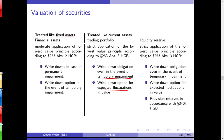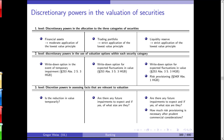There are two levels of discretionary powers in security valuation. At the first level: financial assets use the moderate lowest value principle; trading portfolio and liquidity reserve use the strict application. At the second level: within each category there are valuation options — a write-down option for temporary impairment of financial assets, a write-down option for expected value fluctuations in the trading portfolio, and a write-down option for expected fluctuations in the liquidity reserve.